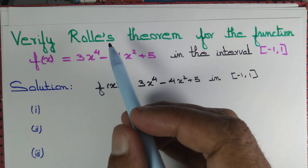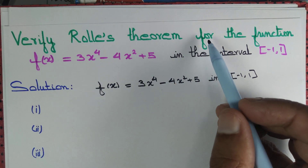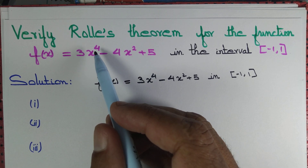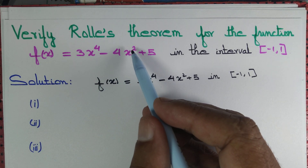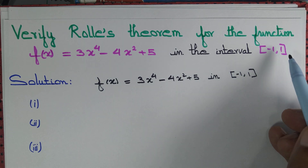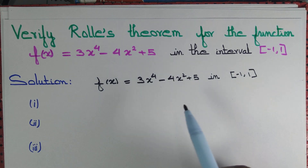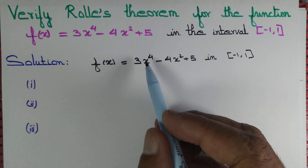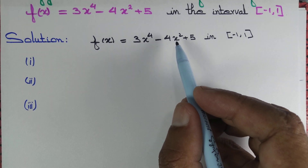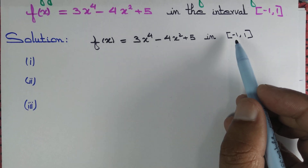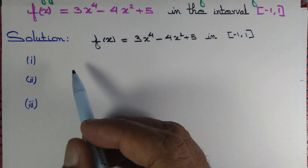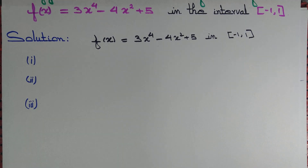Let us verify Rolle's theorem for the function f(x) = 3x⁴ - 4x² + 5 in the interval [-1, 1]. We are given this function and interval, and we want to verify Rolle's theorem.